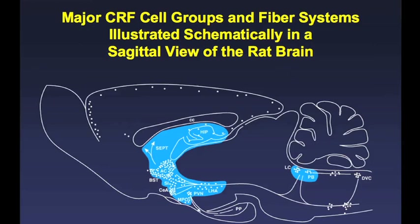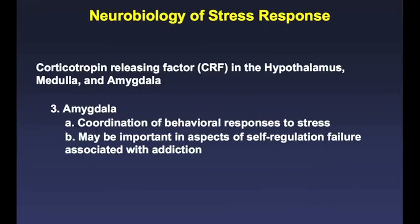Just to give you an example, this is a rat brain — there's not much cortex, and that's a good thing because you don't want rats running around with a lot of cortex. You can see the CRF is in the places I talked about: localized in the hypothalamus, going down into the portal system and releasing ACTH. It's also localized in the amygdala, the CEA structure, and in the brain stem.